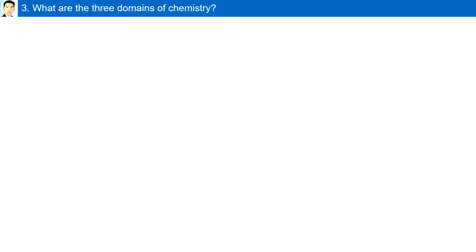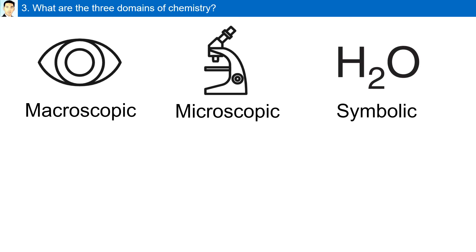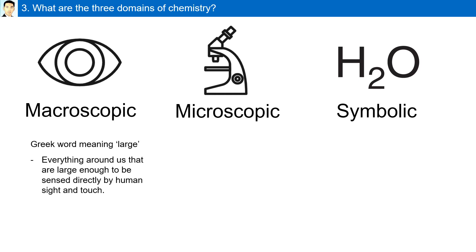What are the three domains of chemistry? The three domains of chemistry are macroscopic, microscopic, and symbolic. Macroscopic is from the Greek word meaning large. This covers everything around us that is large enough to be sensed directly by human sight and touch.